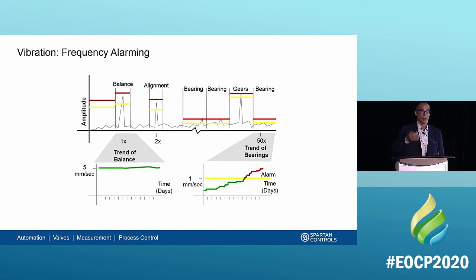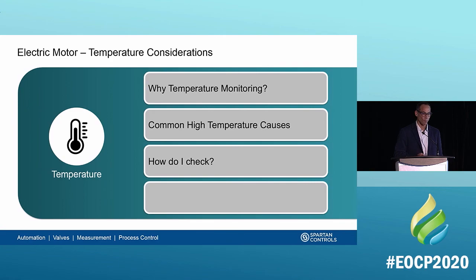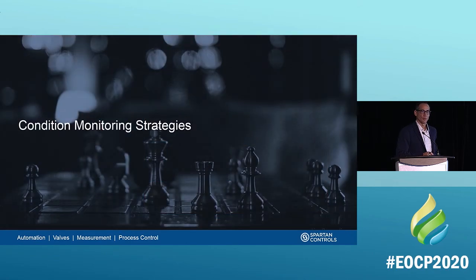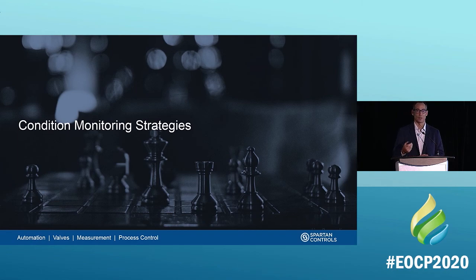We can similarly go through temperature and lubrication and discuss how those measurements are used in a condition monitoring program, but we don't have time today. So now, how do we take all of those technologies and implement them in a predictive maintenance program? It's one thing to monitor and determine the condition of an asset while it's running; it's quite another to actually use that effectively to perform maintenance without causing any downtime. We'll talk about how we roll these together into different programs.